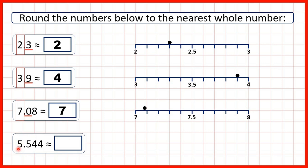Finally, we have 5.544. So we have 3 digits after the decimal point, but that doesn't matter, because we still do the same thing. We find our ones digit and look at our tenths digit.